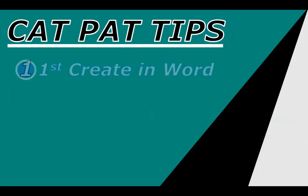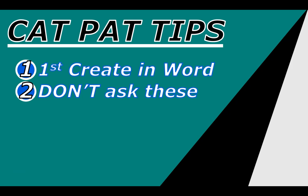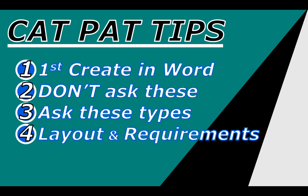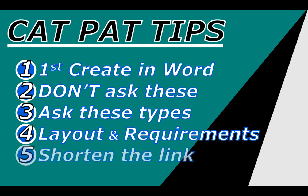Let's quickly recap the five CatPAT tips. Number one: create your survey in Word and plan it there first. Number two: don't ask for name and surname, age, or questions that yield common answers — focus on measurable questions involving dates or categories that will help with spreadsheet and database calculations. Number three: ask the right types of questions. Number four: get those layout and requirement marks by following the instructions carefully. Number five: shorten the link, especially if using an online form.